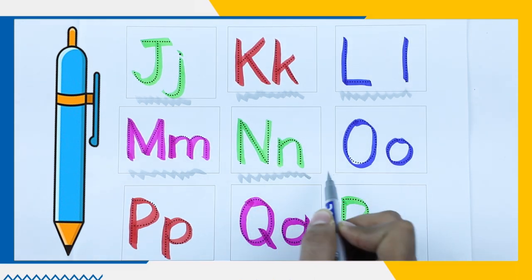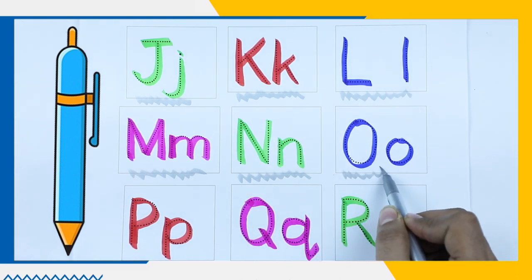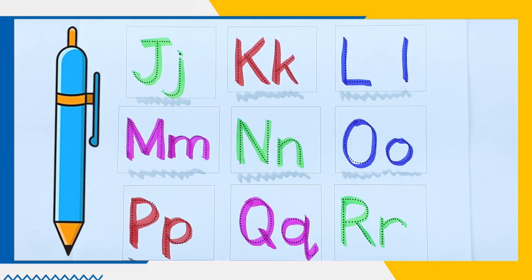N, N for nest. It's a green color. O, it's a blue color. P, it's a red color. P for parrot.